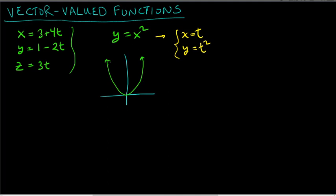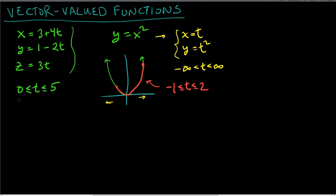If we want the entire parabola, we have to specify that t ranges from negative infinity to positive infinity — t could be any real number. But if you only want a piece of the parabola, say from x = −1 to x = 2, then you specify t varies between −1 and 2. If we only go from t = 0 to t = 5, that gives a line segment.